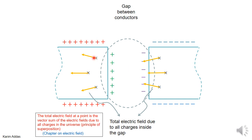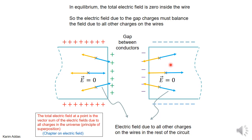The orange vectors represent the net electric field at those six points due to the charges in the gap only. But we know that in equilibrium the electric field inside the wire is zero. So the electric field due to all the other charges on all parts of the wire except the gap must be equal and opposite — these are the blue vectors.